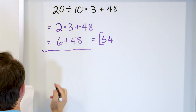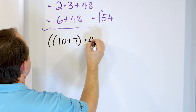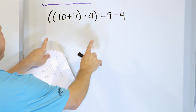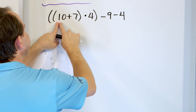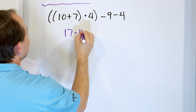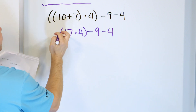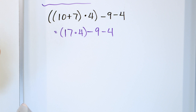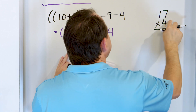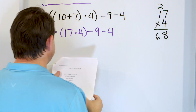We're going to open two sets of parentheses and have: parentheses parentheses 10 plus 7 close times 4 close minus 9 minus 4. We do parentheses first — inside we have another set of parentheses, so we must do that one first: 10 plus 7 becomes 17. Rewrite the problem. Now we have the outer parentheses with 17 times 4. 7 times 4 is 28, 4 times 1 is 4, carry the 2 — we get 68.